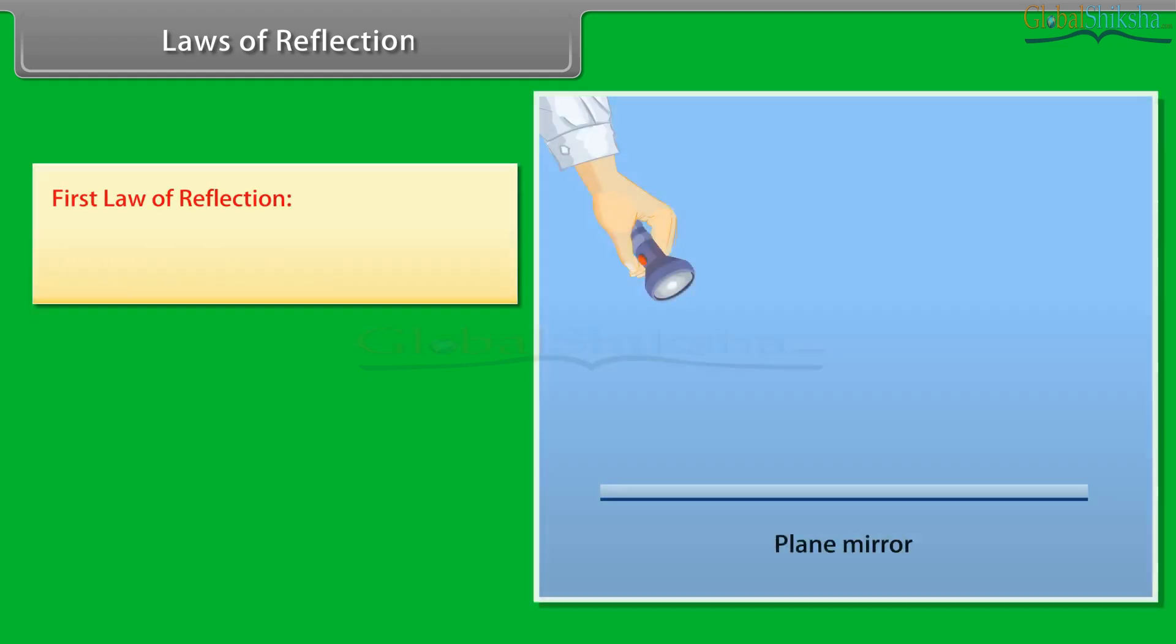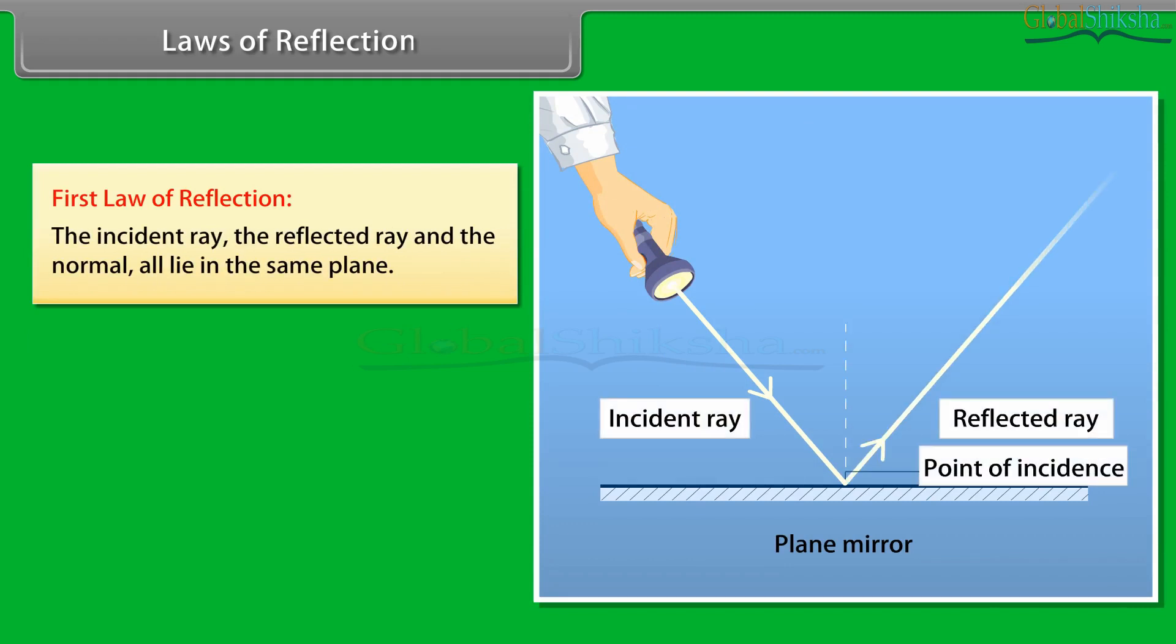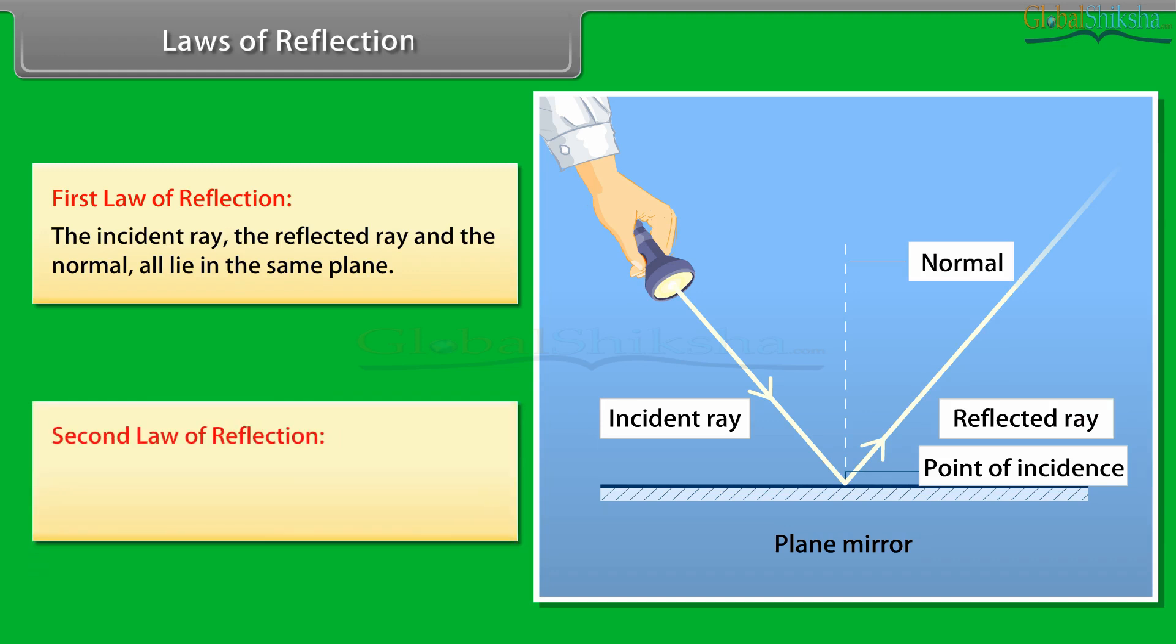Laws of reflection. First law of reflection: The incident ray, the reflected ray and the normal all lie in the same plane. Second law of reflection: The angle of reflection is always equal to the angle of incidence.